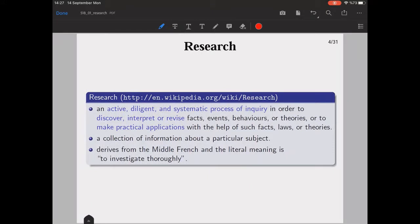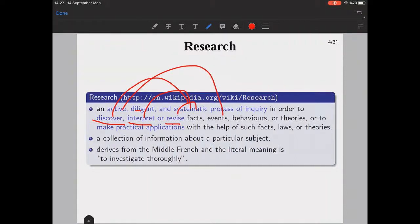What is research by the definition in Wikipedia? It is an active, diligent, and systematic process of inquiry in order to discover, interpret, or revise facts, events, behaviors, or theories. Or you can do research to make practical applications with the help of those facts, laws, or theories.